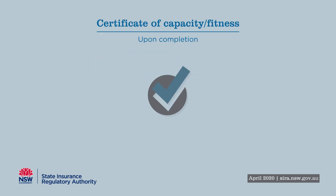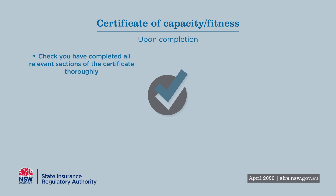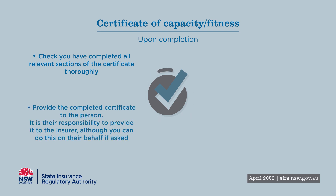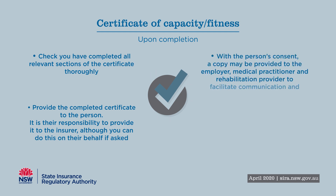Upon completion, it is advised to check you have completed all the relevant sections of the certificate thoroughly. Provide the completed certificate to the person — it is their responsibility to provide it to the insurer, although you can do this on their behalf if asked. With the person's consent, a copy may be provided to the employer, medical practitioner, and rehabilitation provider to facilitate communication and successful rehabilitation.